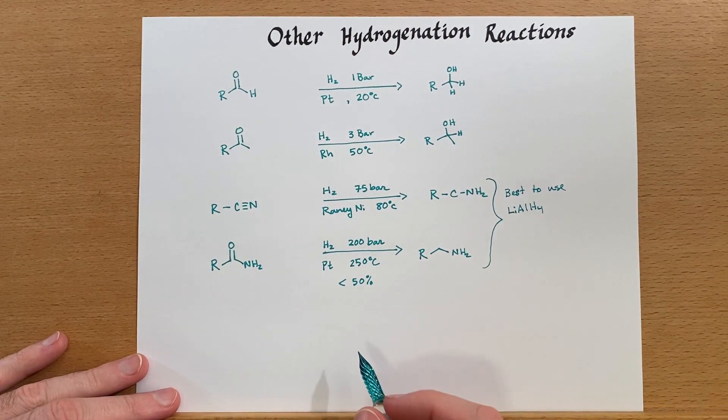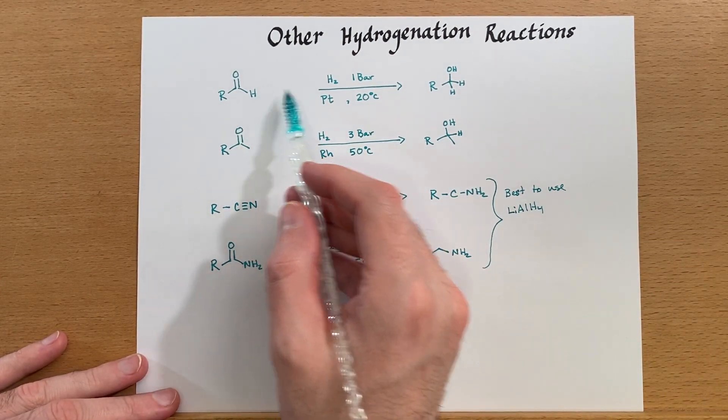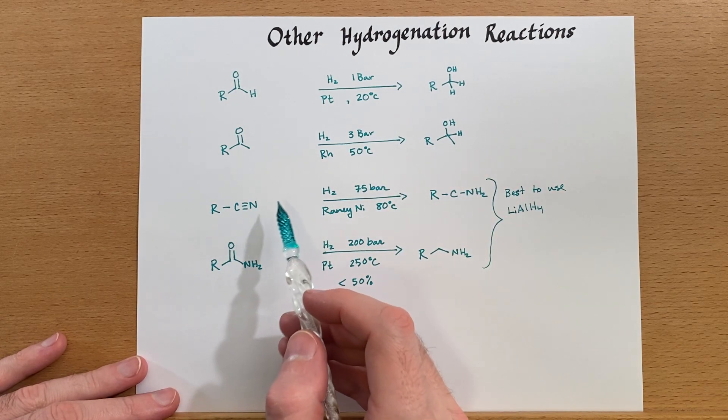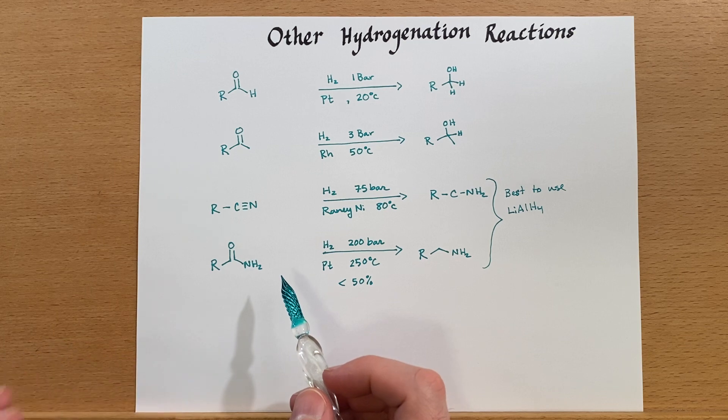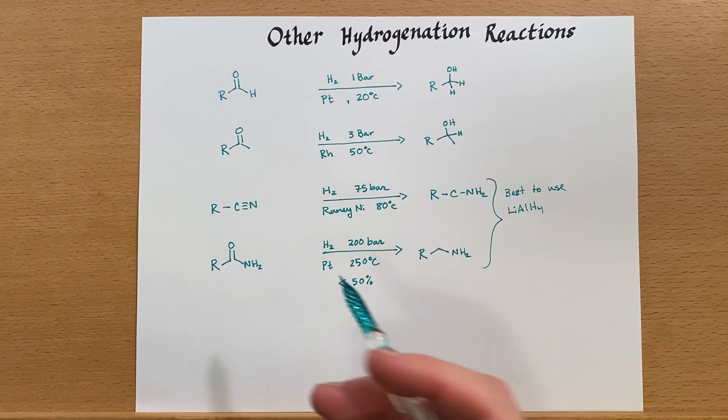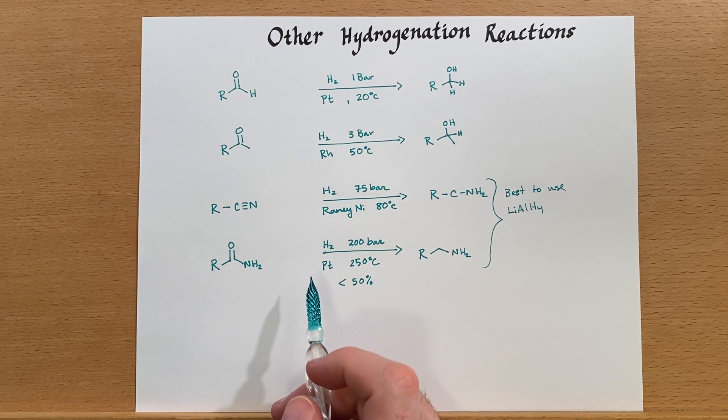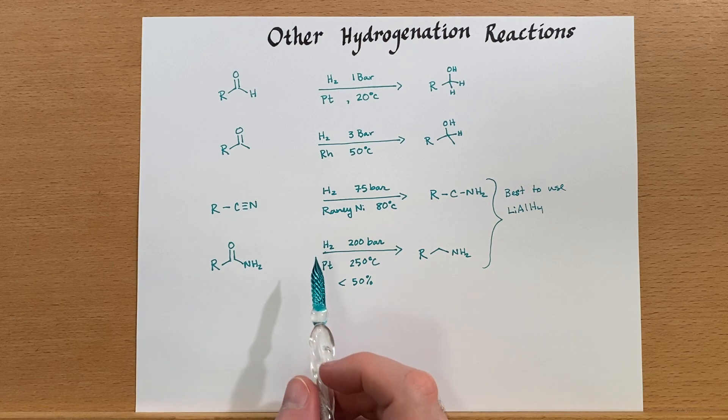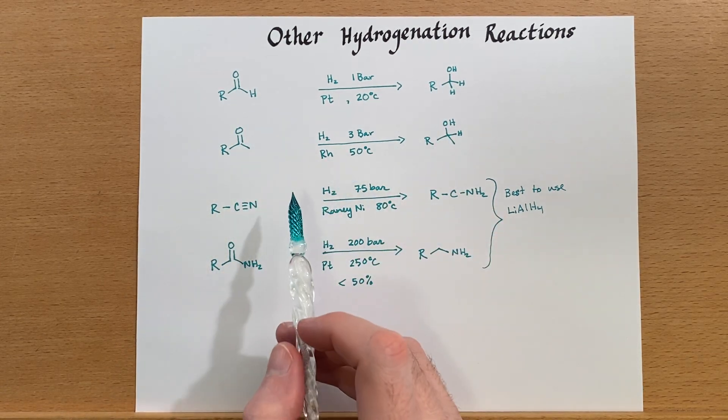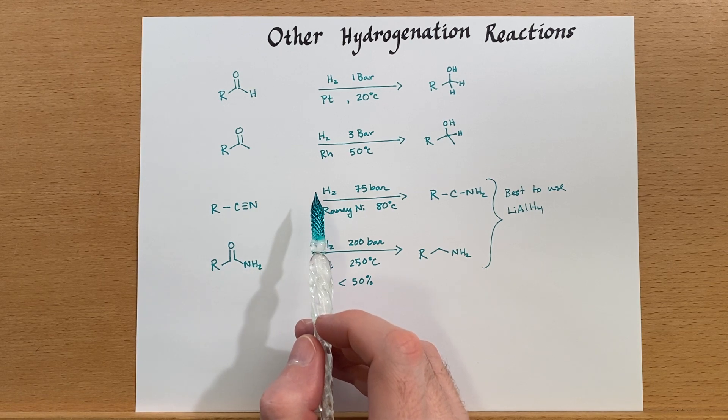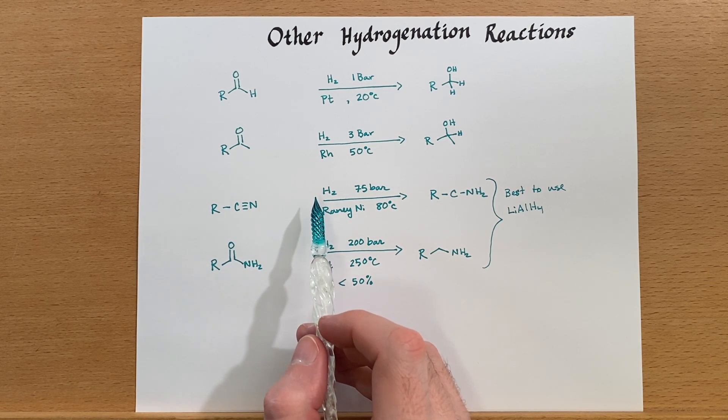Now you may ask, why would we prefer to use hydrogenation rather than lithium aluminum hydride for the ketones and aldehydes, because that will also reduce them? Well, in these two reactions above, you'll notice that the atom economy is 100 percent.